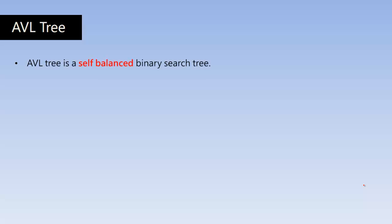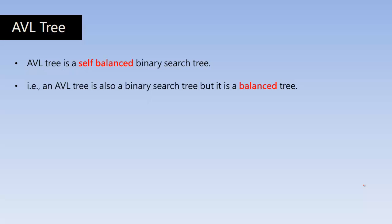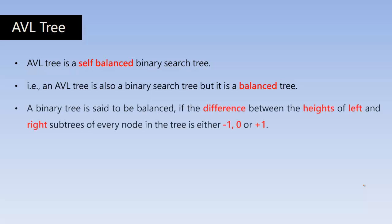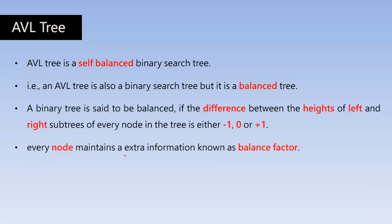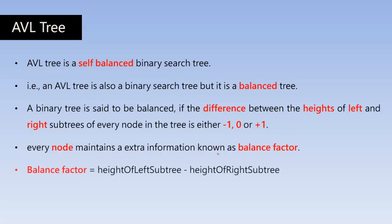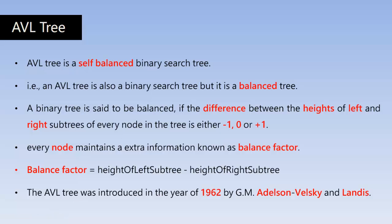An AVL tree is a self-balanced binary search tree — it is also a binary search tree but it is a balanced tree. A binary tree is said to be balanced if the difference between the heights of the left and right subtree of every node is either -1, 0, or +1. Every node maintains extra information known as the balance factor, which must be -1, 0, or +1. Balance factor equals the height of the left subtree minus the height of the right subtree. The AVL tree was introduced in 1962 by Adelson-Velsky and Landis, which is why it is called the AVL tree.